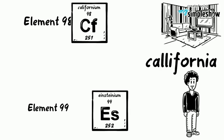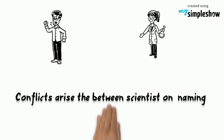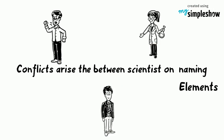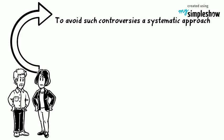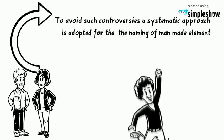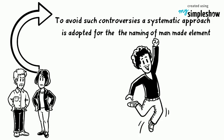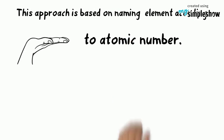Conflicts arise between scientists on the naming of man-made elements. To avoid such controversy, a systematic approach is adopted for naming man-made elements. This approach is based on naming the element according to its atomic number.